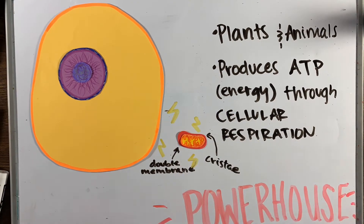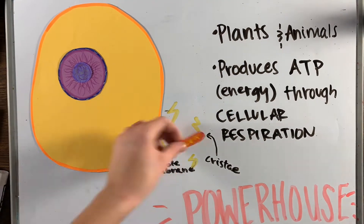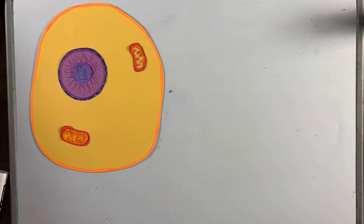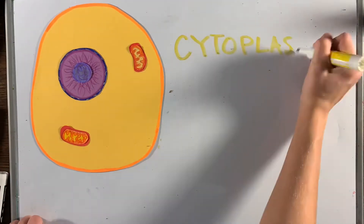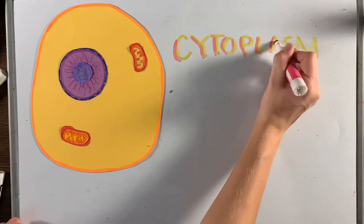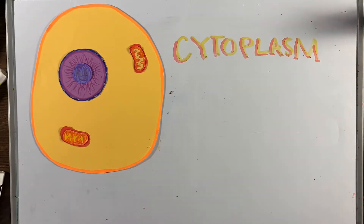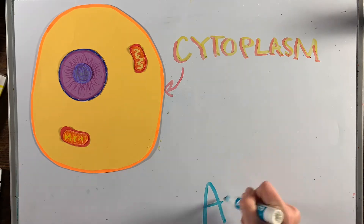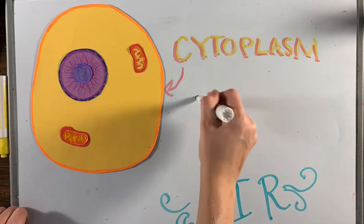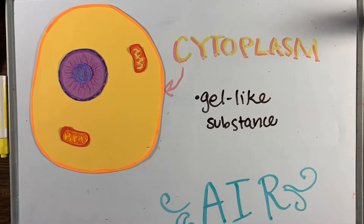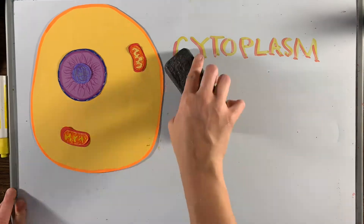The mitochondria is the powerhouse of the cell factory. The cytoplasm is the gel-like substance that surrounds the organelles in the cell. It's also the site of most cellular activities, and the cytoplasm is basically the air in the factory that surrounds everything else.